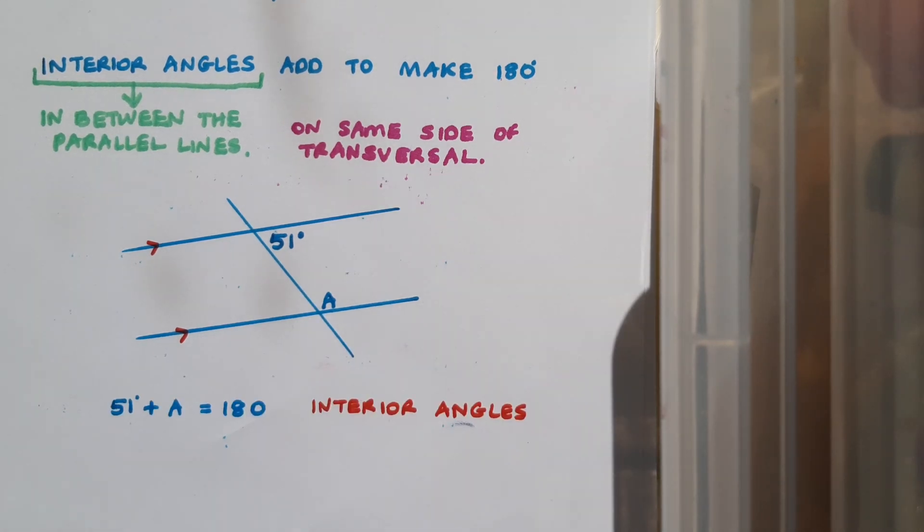I can say that 51 plus a equals 180. And the reason for this is because 51 and a are interior angles. I can find the value of a by subtracting 51 from 180. So a equals 129 degrees.